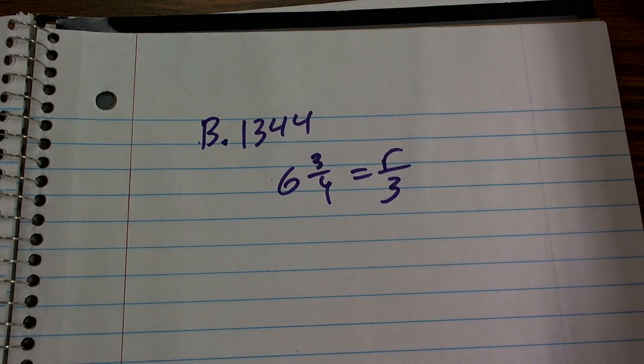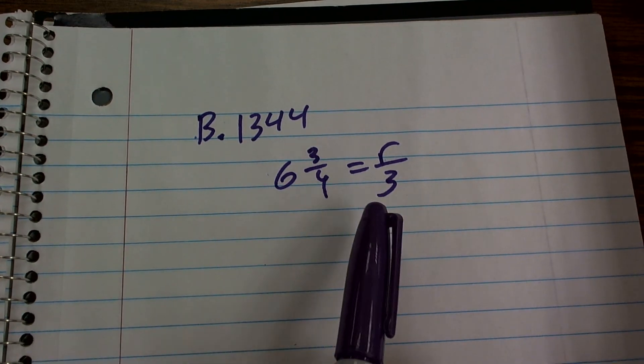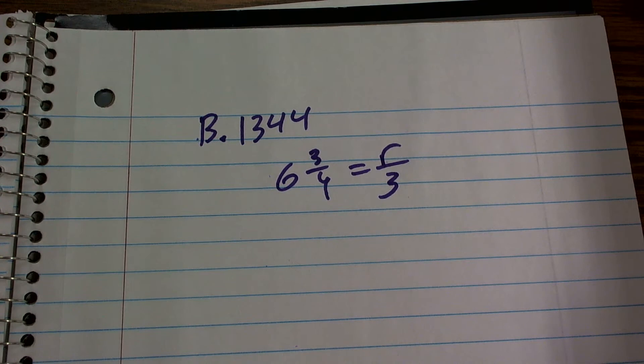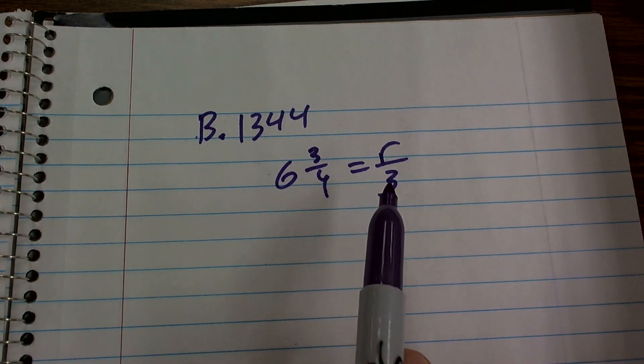So let's just get this one last video done. What I have is 6 and 3 fourths equals r over 3. So what I'm going to do here is remind myself that when solving for a variable, an unknown, which is r in this case,